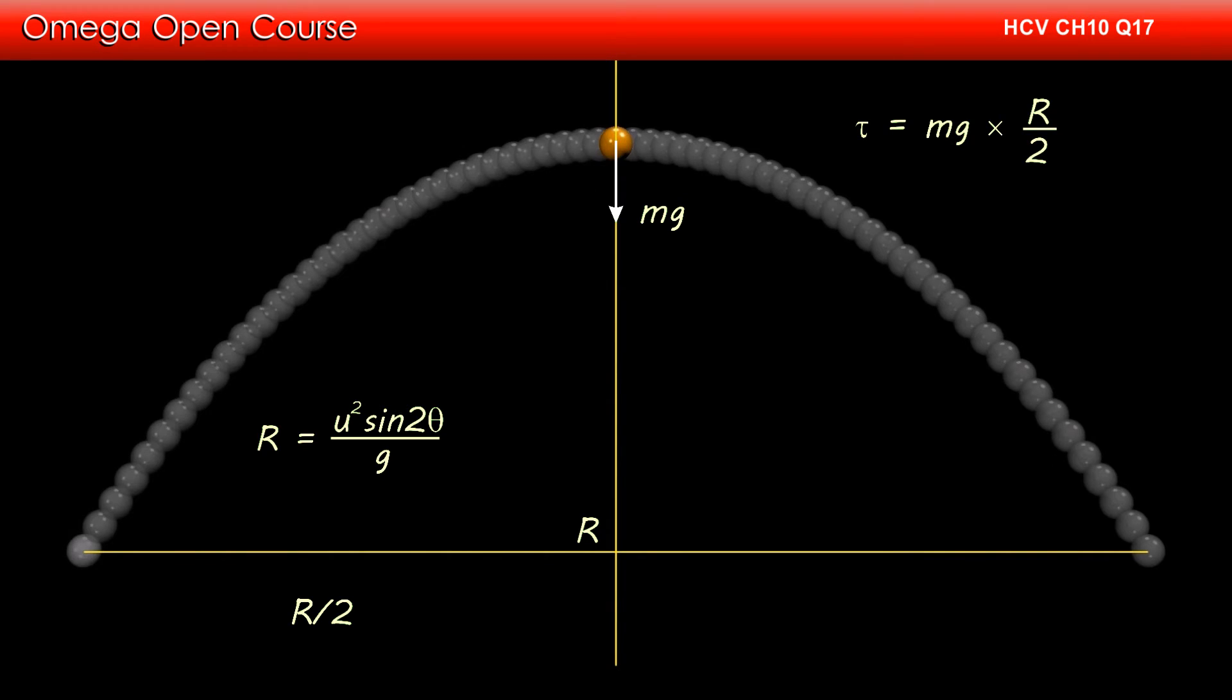The torque due to weight of the particle about the point of projection is mg into R by 2. Putting the value of R, we get mg into u squared sine 2 theta by 2g.